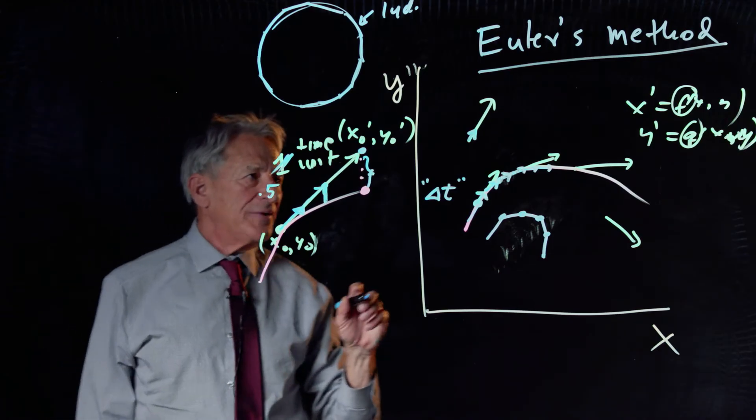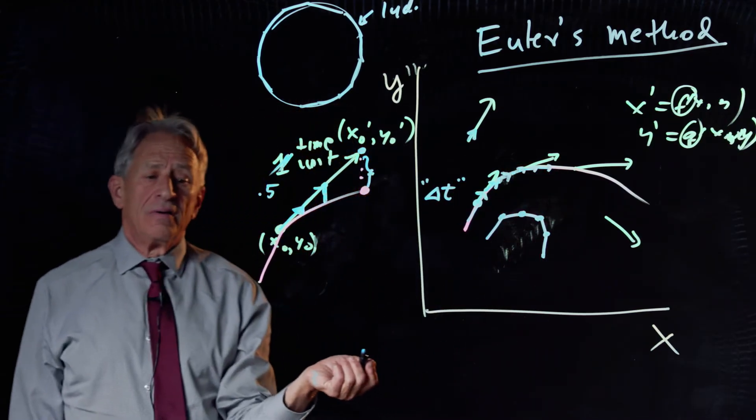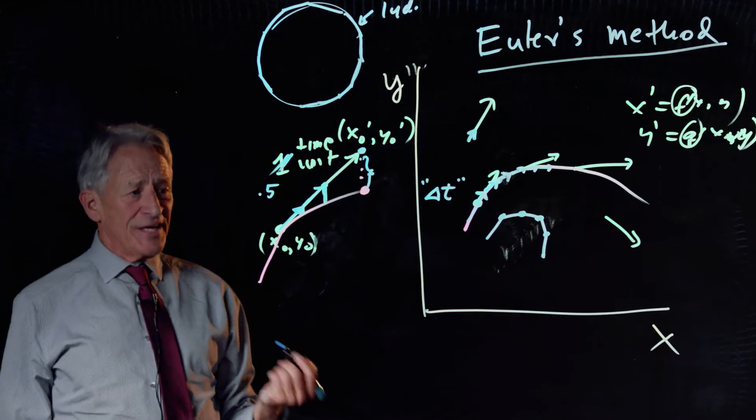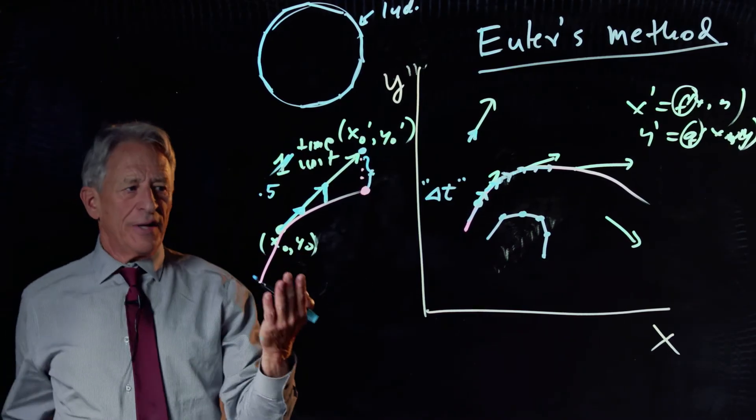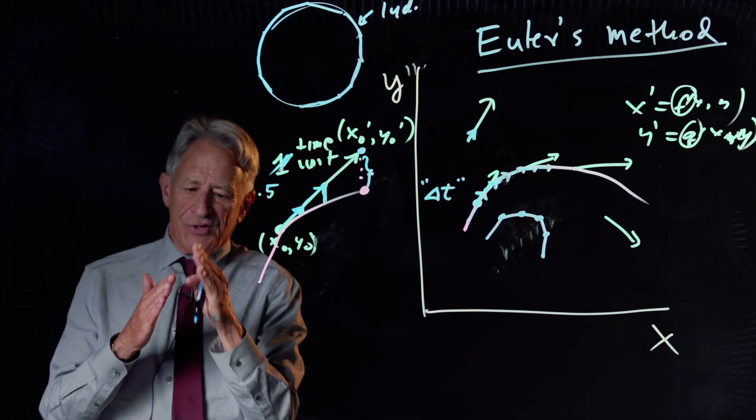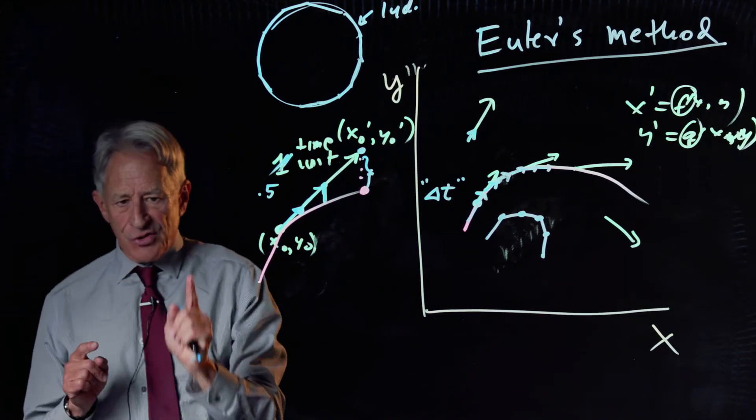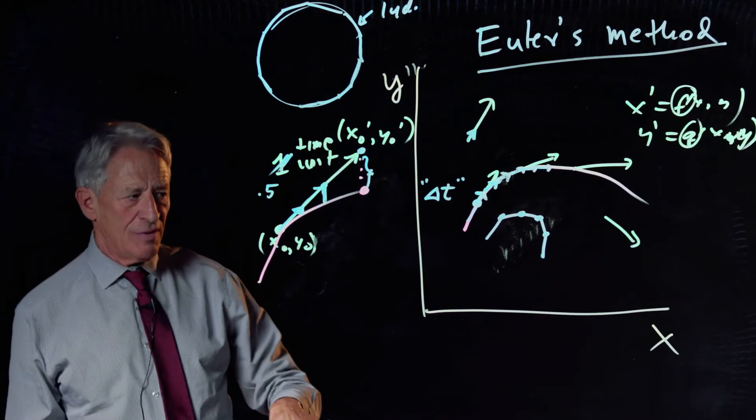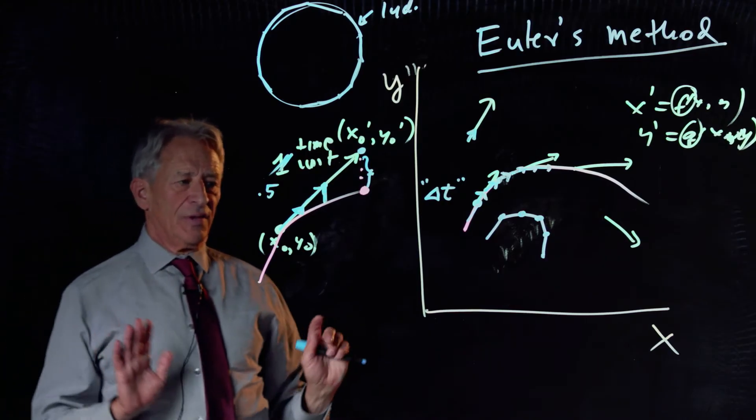We're going to call him Euler, and this is Euler's method. Euler's method says essentially, approximate the red curve by a sequence of little short straight line segments, and the lovely thing, and this is a mathematical theorem,